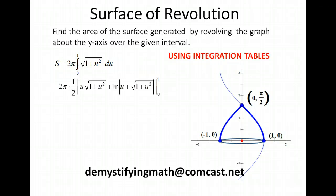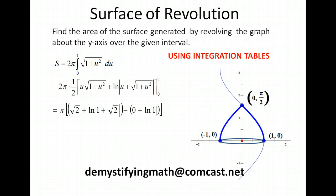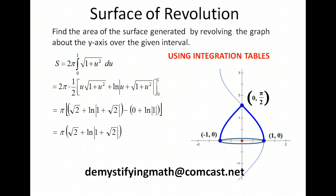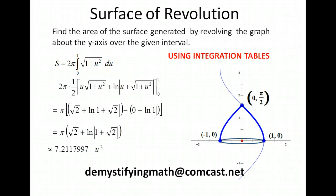Clearing out the 1/2 and the pi and plugging in 1 gives us the square root of 2 plus the natural log of 1 plus the square root of 2. Plugging in 0 gives 0 plus the natural log of 1, which is 0. So we have pi times the square root of 2 plus the natural log of 1 plus the square root of 2 as the surface area — approximately 7.2 units squared. Thank you for tuning in to Demystifying Math. I hope this helped you with surfaces of revolution.